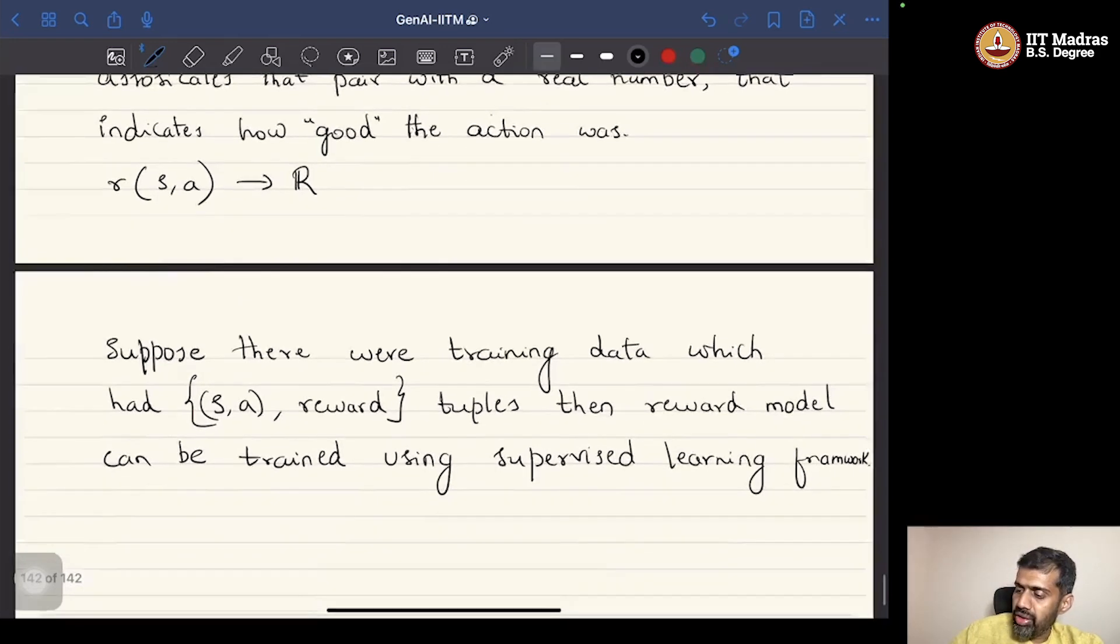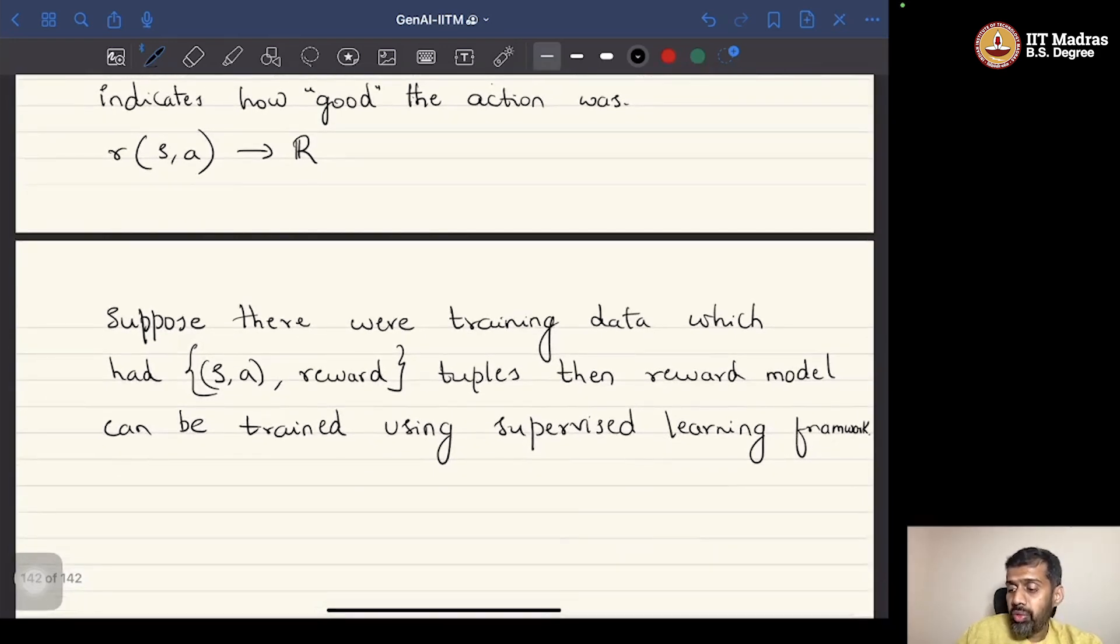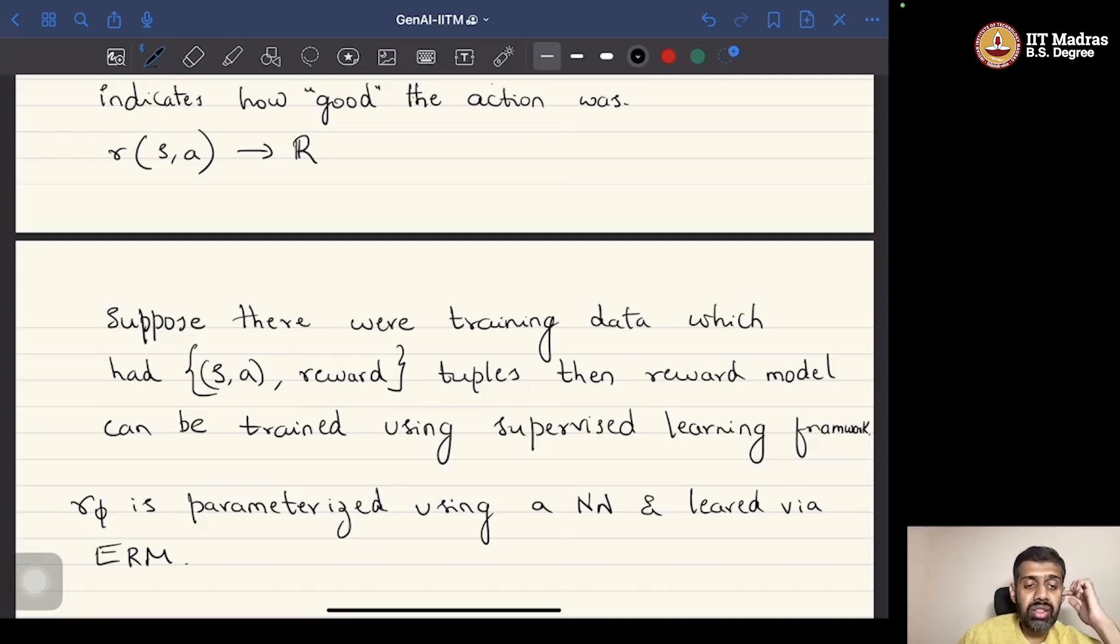Typically what is done is that the reward model r_phi is parameterized using a neural network and learned via ERM, empirical risk minimization, which is nothing but the usual gradient descent based objective minimization framework.